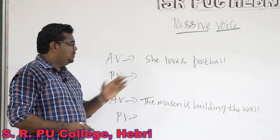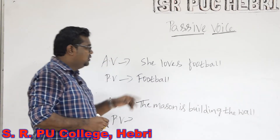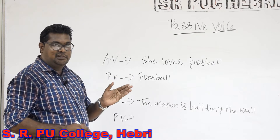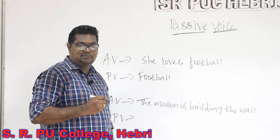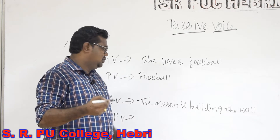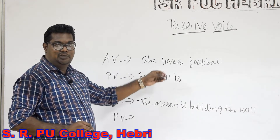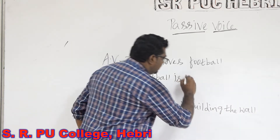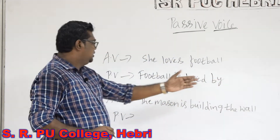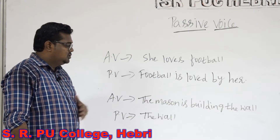Next sentence: She loves football. Apply the same rule — interchange subject into object and object into subject. So 'football' will become the subject in passive voice. Then identify the main verb. Here 'loves' becomes the main verb, and we are supposed to identify the tense. 'Loves' is simple present tense. In simple present tense there are two auxiliaries: 'is' and 'are'. We use 'is' if the subject is singular and 'are' if the subject is plural. In this case 'football' is singular, so the auxiliary is 'is'. Then we change the main verb into its past participle form, so 'loves' will become 'loved'. Then use the preposition 'by', and finally write the object. 'She' will become the object, but we cannot write 'she' as it is — we need to change it to the correct form of the pronoun.